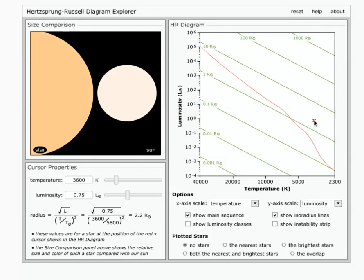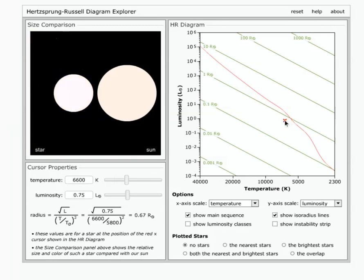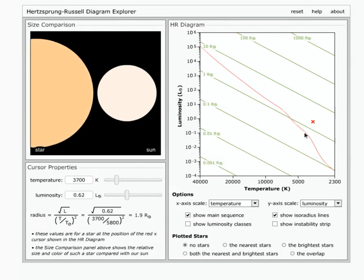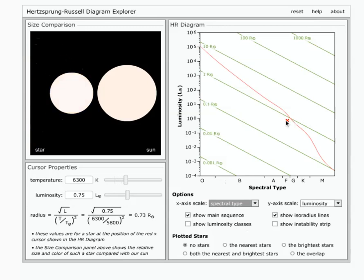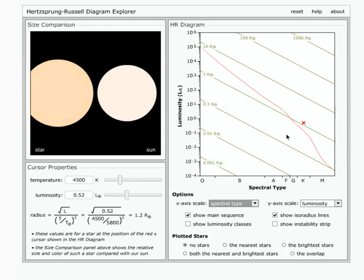And you'll notice that weird thing about HR diagrams, which is that the temperature increases as we go to the left, and it decreases as we go to the right. Now we've seen in other places in the class that I could choose a different scale. In particular, we've talked about spectral type. So you could instead make an HR diagram using spectral type, because that really is just talking about the same thing as temperature.